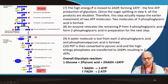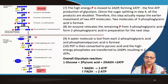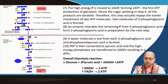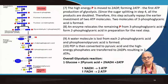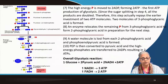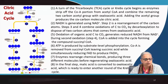The overall glycolysis reaction: one glucose gives two pyruvic acids, two NADH, and two ATP net. One NADH gives you three ATP, and if you have FADH2 that will give you two ATP — this is very important for the next step.